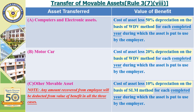You have to focus on movable assets. There are two fringe benefits related to them. In the last video we learned about the use of movable assets — where the employer gives assets to use. But now we will learn what happens when the employer transfers the movable assets to the employee or a household member. In this case, that transfer is the benefit.